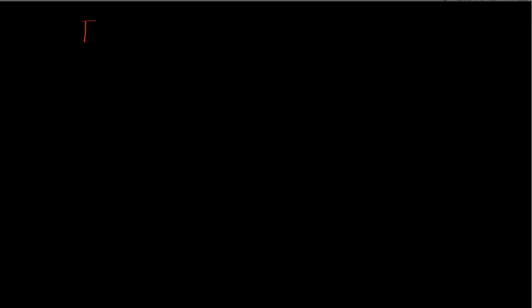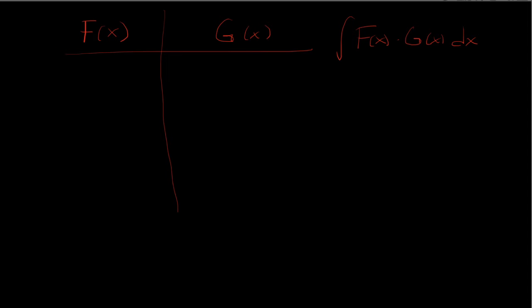In this video, we'll be talking about tabular integration. The way it works is we're going to have a function f and another function g. We're going to integrate f(x) times g(x). I'm going to select f(x) to be a function that I'll be taking the derivative of — something that's easy to differentiate. Usually, you're going to select this to be a polynomial, like x to the n.